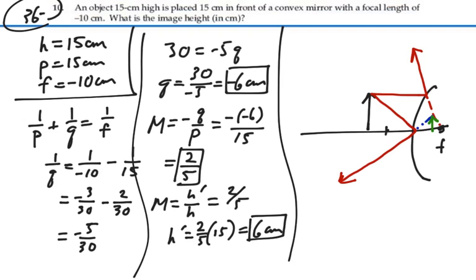So our image is formed at negative 6. Negative means it's behind the mirror. It's not on the side of the outgoing rays. It is between the focal point and the vertex, which makes sense. Focal point's at negative 10. The image is at negative 6.